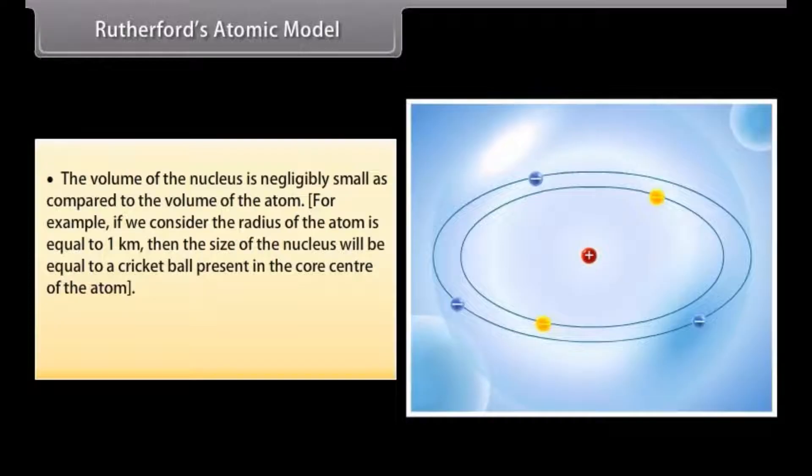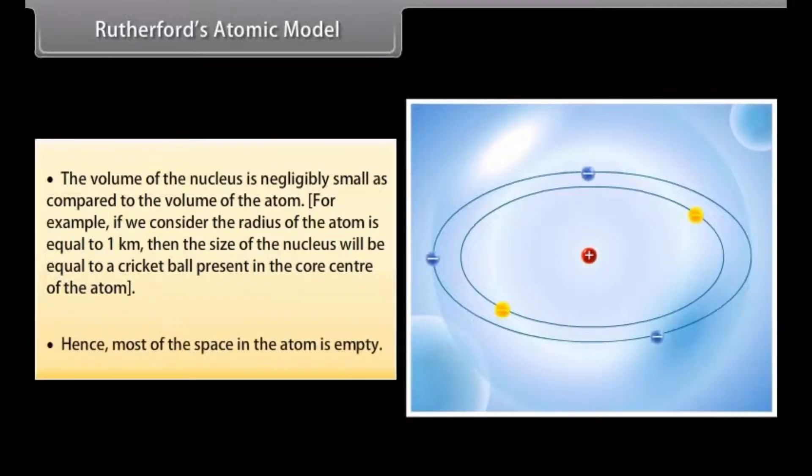The volume of the nucleus is negligibly small as compared to the volume of the atom. For example, if we consider the radius of the atom is equal to 1 km, then the size of the nucleus will be equal to a cricket ball present in the core center of the atom. Hence, most of the space in the atom is empty.